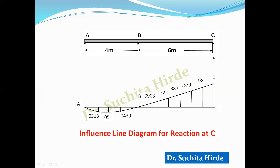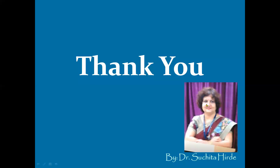To get the maximum upward reaction at C, place the load only between B and C. To get the maximum uplifting force at C, place the load on portion AB only. This is how we draw the influence line diagram for reaction at C. I hope you find this video useful. Subscribe to the channel and press the bell icon to get notifications of upcoming videos. Thank you for watching.